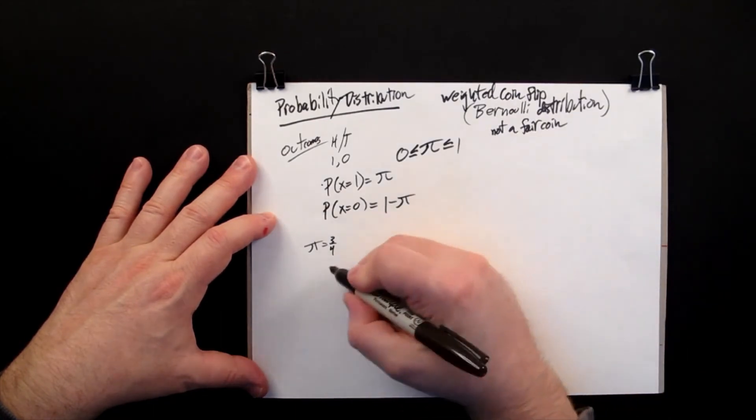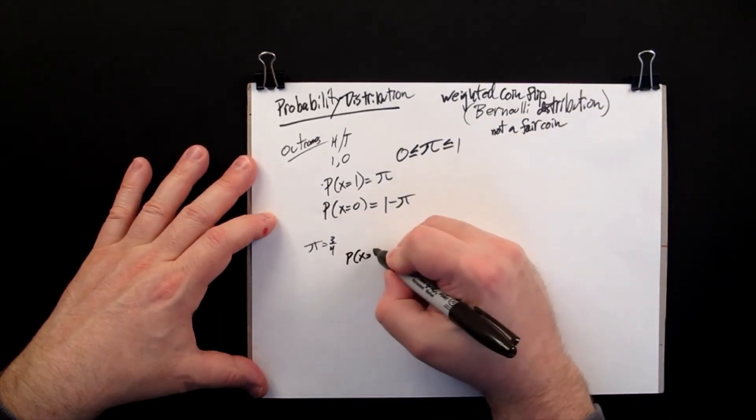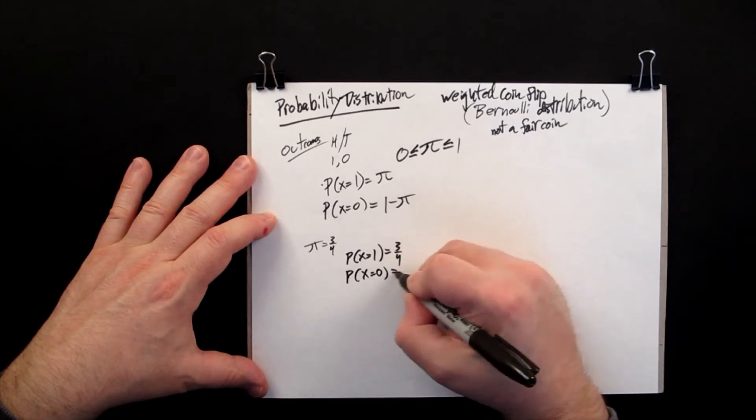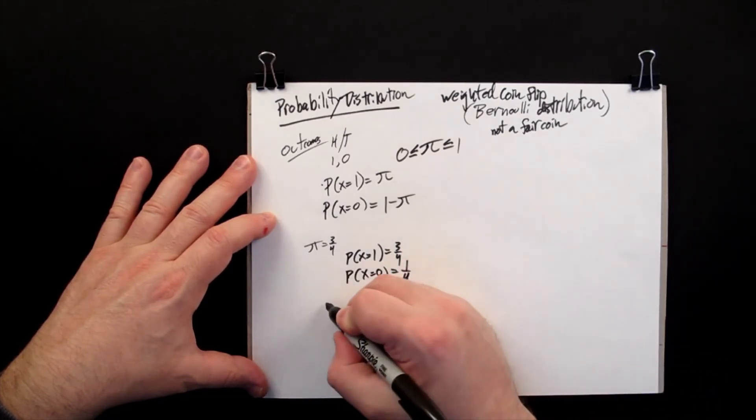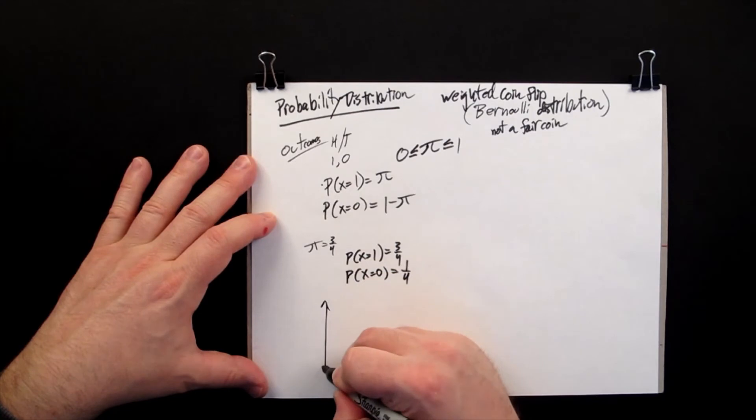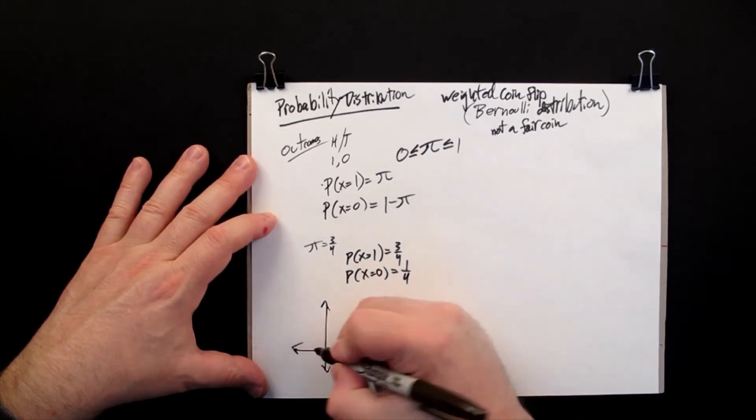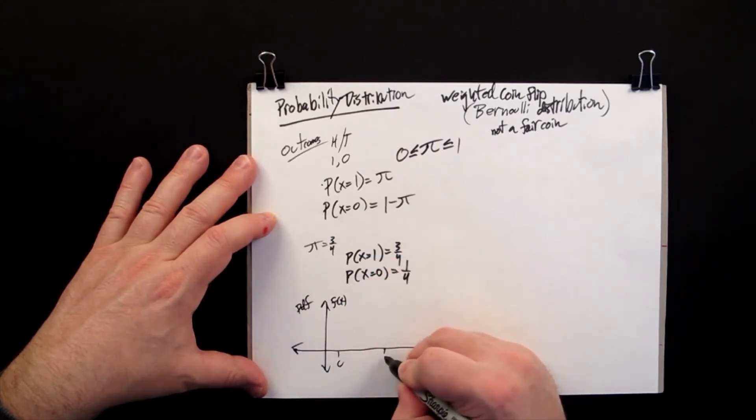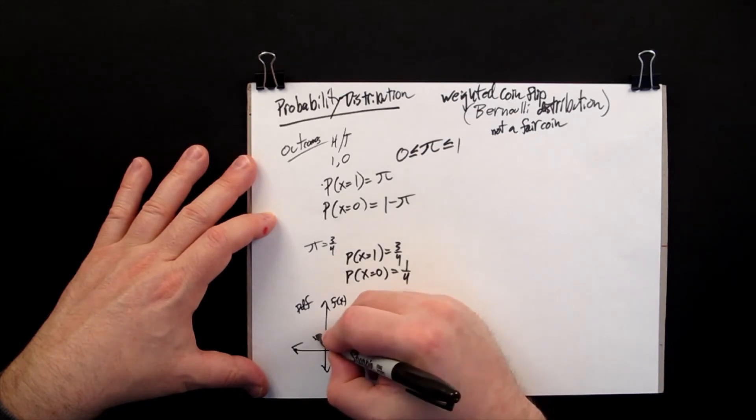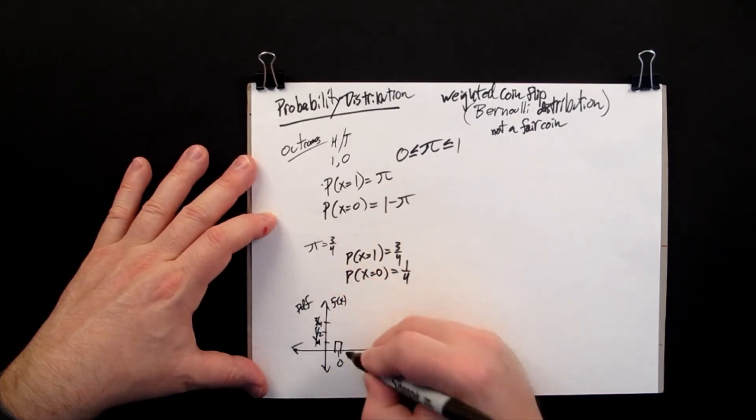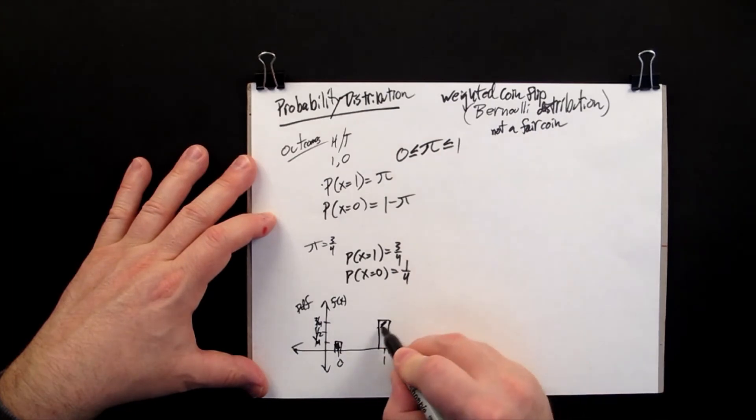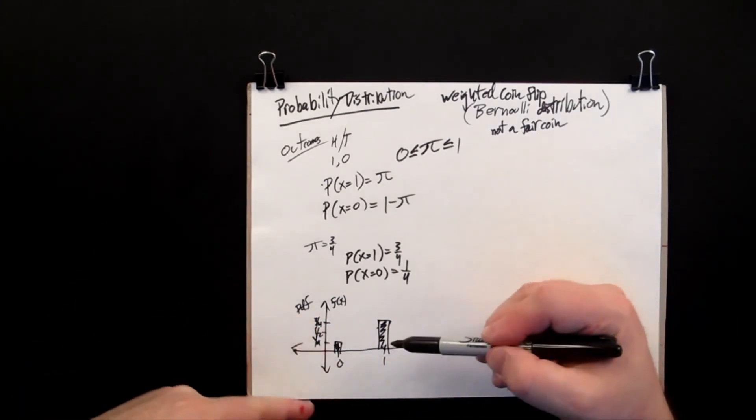So now, what happens is if you look at the graph of the PDF, remember this is graphing f of little x. So this time you have 1 fourth, 1 half, 3 fourths, so you have 1 quarter weighting there and 3 quarters weighting here. So the distribution is not even.